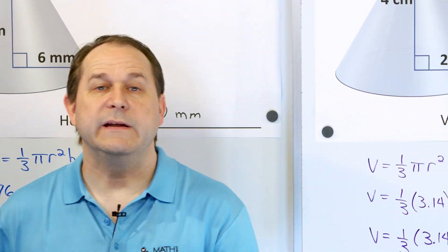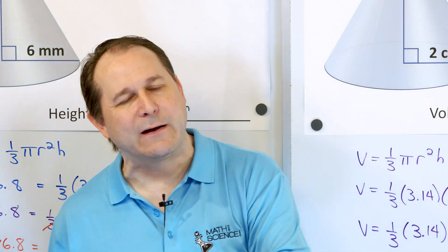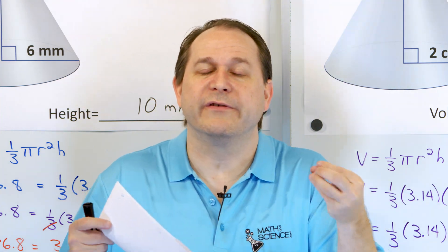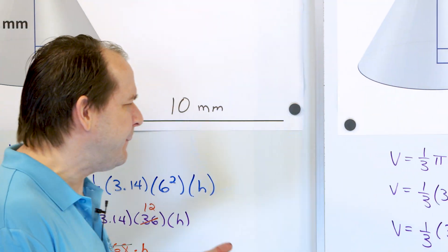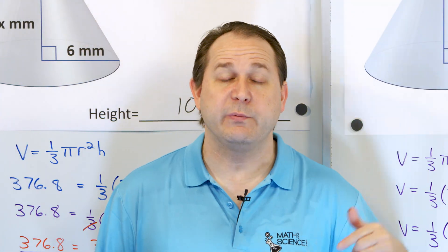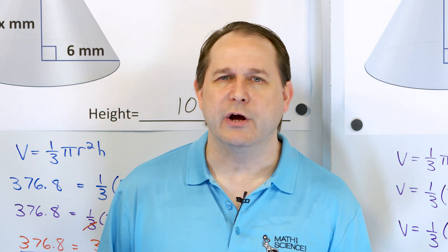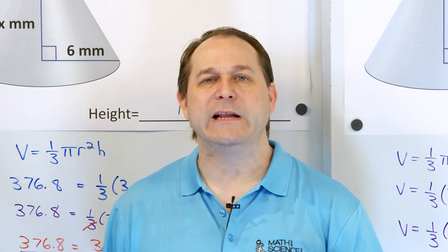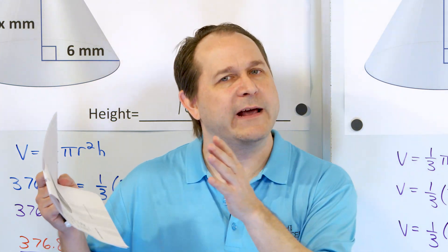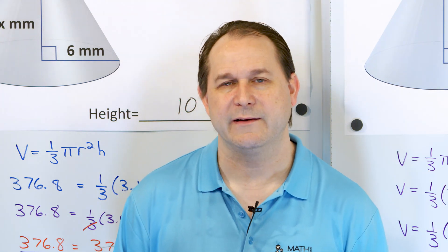Whether you're given the radius and height of a cone and trying to find the volume, or given the volume and going backwards to find the height or radius, the equation is the same. Put in what you know and use the rules of algebra to solve it. We don't need a separate lesson for each scenario — once you know how to manipulate equations, you can apply that skill to this equation and many others. Make sure you understand how to calculate the answers, and follow me in part two to continue building your skills.